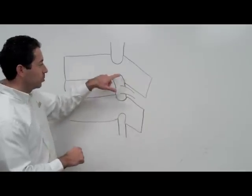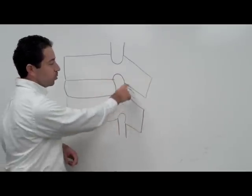With stenosis, that's the actual shrinking of the space where the nerve comes out.